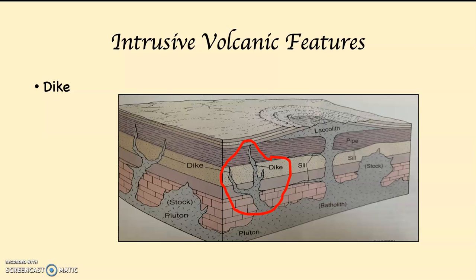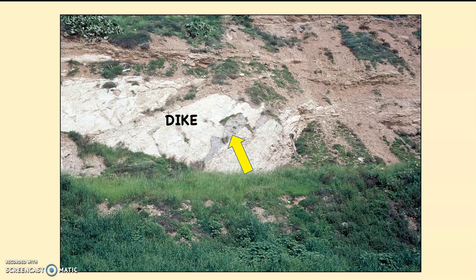If you have a lot of magma that comes up into the crust, it's going to cause pressure on the layers of rock above it. That will cause the rock to crack, and that liquid will squeeze into those cracks. When it cools and solidifies, it makes what's known as a dike. Dikes are formed when magma squeezes into cracks in the crust, cools, and solidifies. If it made it all the way to the surface and fed a volcano, that would be a pipe. In this photograph, the light colored limestone is on either side, and the yellow arrow points at the gray intrusive igneous rock that cuts up into what would have been a crack in the rock.